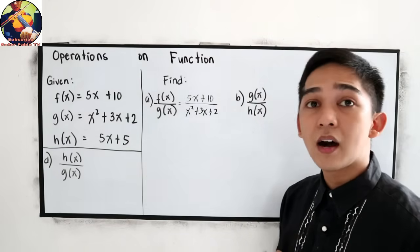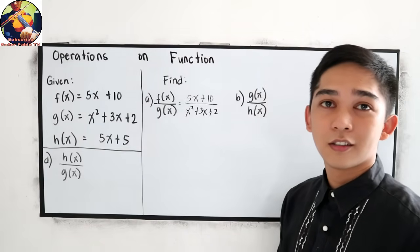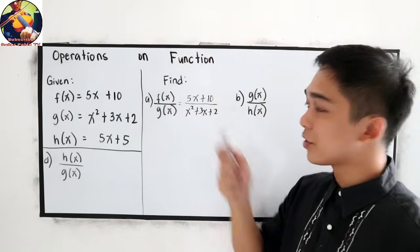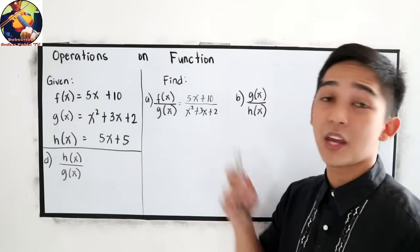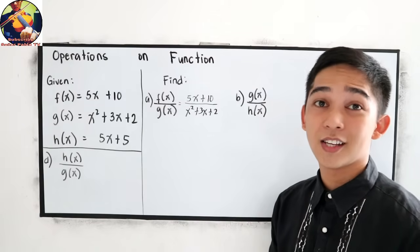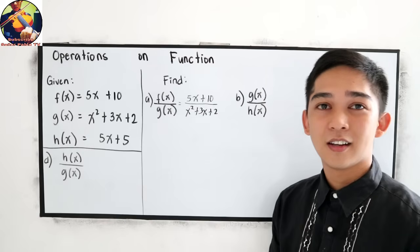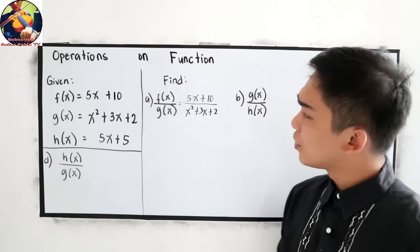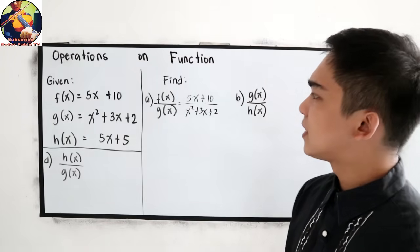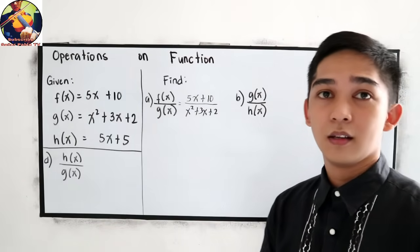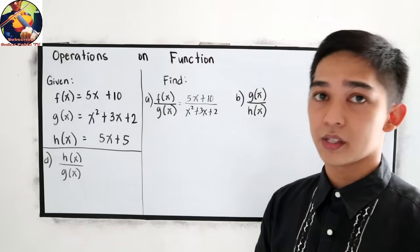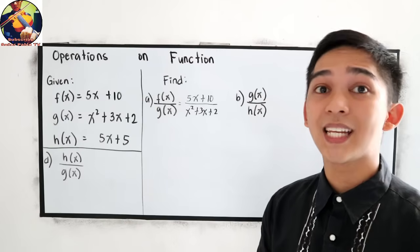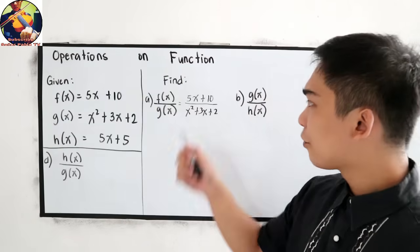So we have a numerator and a denominator. This is a fraction. Let us simplify. To simplify, since this is a polynomial, we can find the factors of our numerator and denominator.